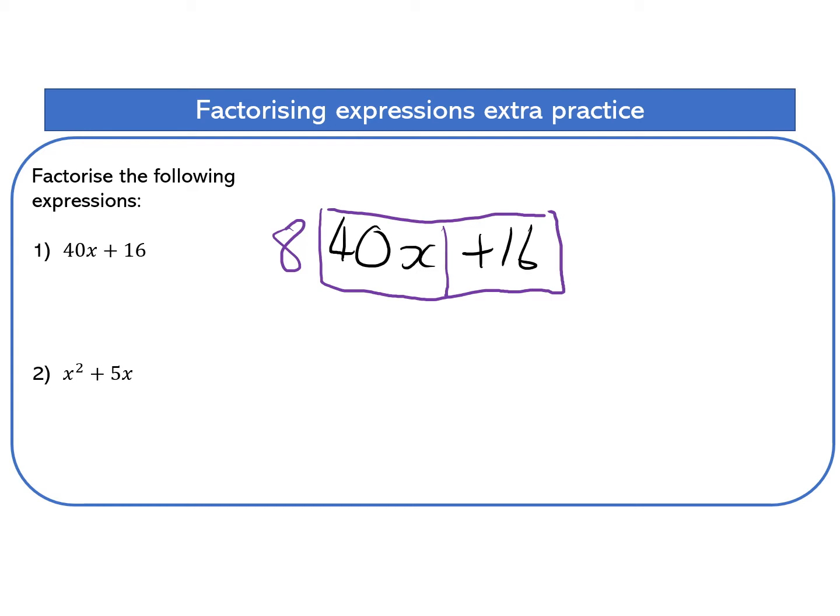Eight times what is 40X? Eight times five is 40. Eight times what is 16? Eight times two. That's a positive. So that's simply eight bracket five X plus two. That's done. Let's do the next one.